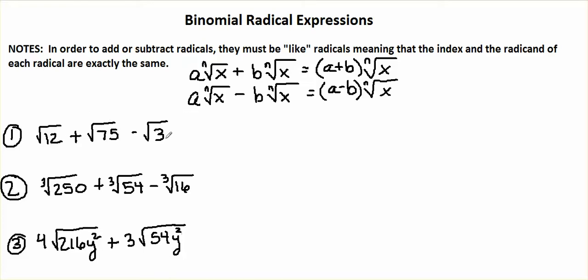Right now our radicals are not like radicals — we cannot add them. But let's go ahead and simplify them. We're taking square roots, so we're looking for groups of 2. We know that 12 factors into 4 times 3, and 4 factors into 2 times 2. So here's a nice group of 2 right here. We're going to pull out a 2, and we have 3 remaining under our radical.